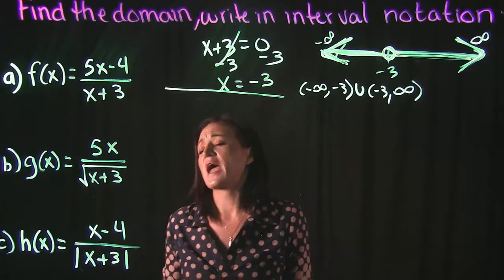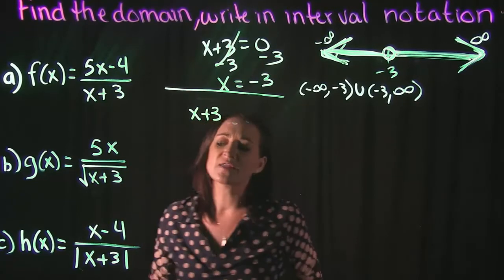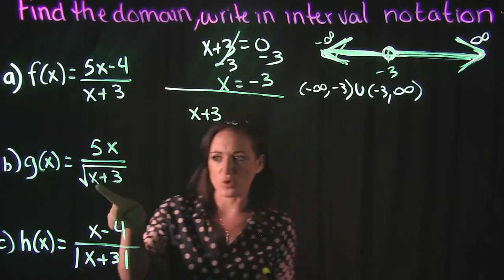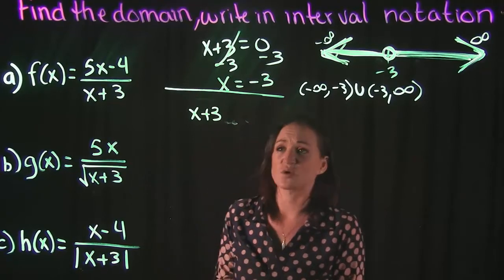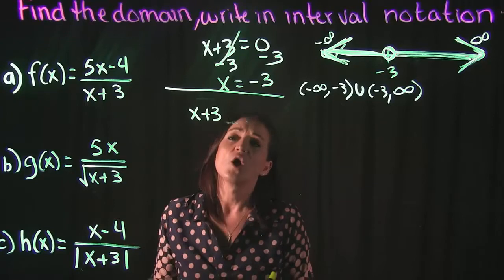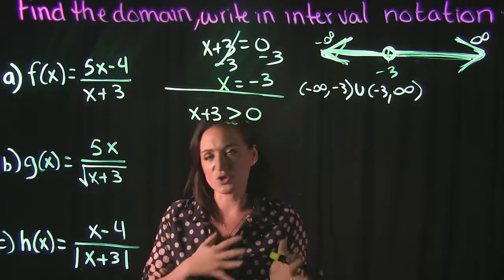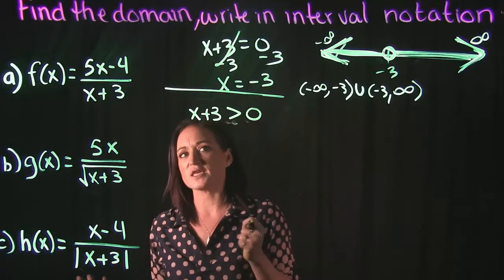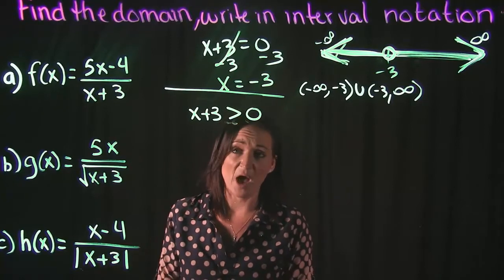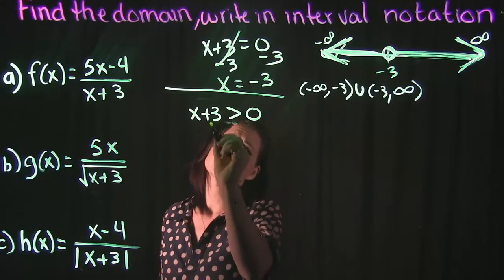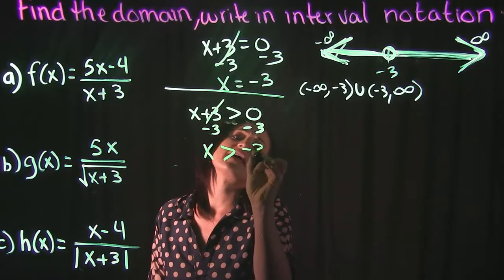Moving on to example B, we have the square root of x plus three in our denominator. We want to set that equal to zero, but with radicals we need to keep in mind that we always want the radicand to be positive — negative values inside a radical throw it off. So we take what's underneath the radical and set it greater than or equal to zero. We want it positive since we only take square roots of positive numbers. Subtracting three on both sides gives us x is greater than negative three.